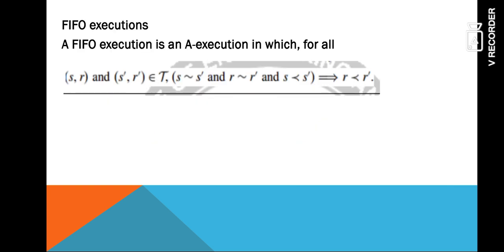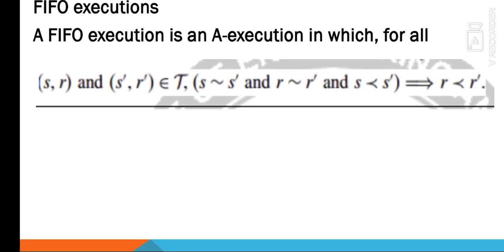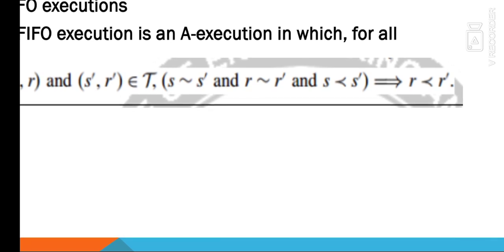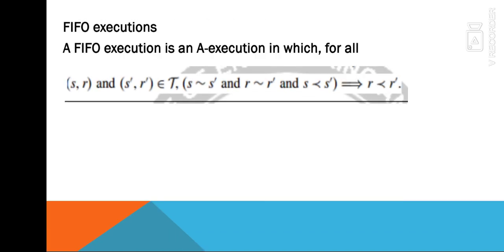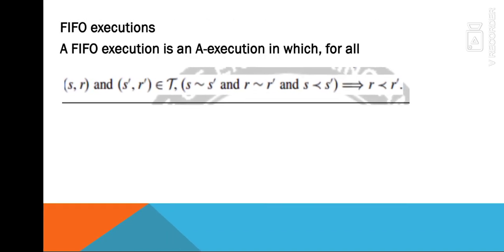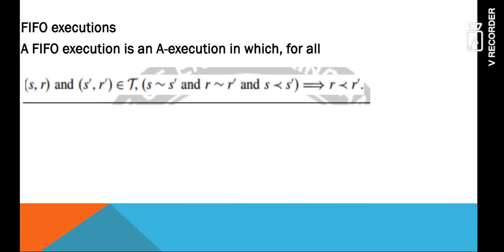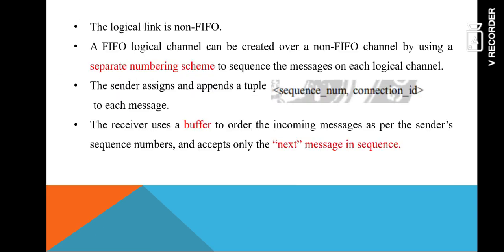The next execution type is FIFO execution. It is also an A execution but we have to strictly follow the condition: S and S' occur at the same process, R and R' occur at the same process, and if S is causally related with S', then R should also be causally related with R'. This is FIFO execution — if the send events are causally related, then their receive events must also be causally related. Usually we assume the logical link is non-FIFO, but you can implement a FIFO scheme over a non-FIFO channel.